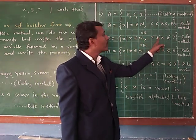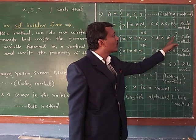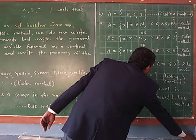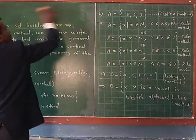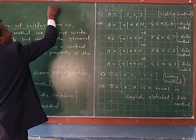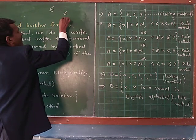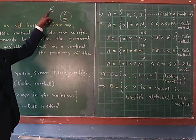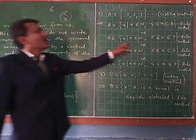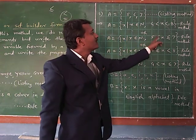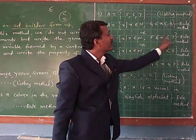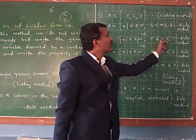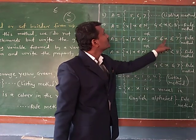The symbol less than or equal to means less than and equal — these two signs combined together give us 'less than or equal to'. Therefore, 5 ≤ x ≤ 7 means the value of x is x = 5, x = 6, and x = 7.